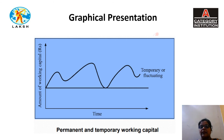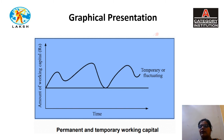We can also present permanent and temporary working capital with the help of a graph. Time is taken on the x-axis and the amount of working capital is on the y-axis. A parallel line to the x-axis shows permanent working capital, whereas a fluctuating curve shows temporary or fluctuating working capital. However the time period, temporary working capital will change, but permanent working capital will not fluctuate — it is permanent.